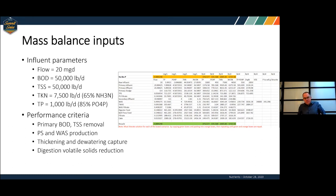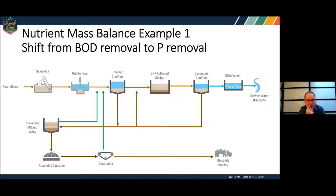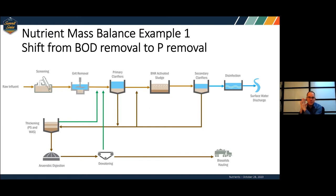The model doesn't require any sophisticated inputs — just flow, some basic plant information, primary performance, capture rates, digester performance — a pretty simple suite of information. We can calibrate this model for almost any treatment plant. I'm going to keep coming back to this process flow diagram and populate it with our nutrient fluxes. This is a generic, pretty typical plant. With this first example, I'm looking at what happens when you shift a plant from BOD removal to biological phosphorus removal — where are you at the most risk for struvite?